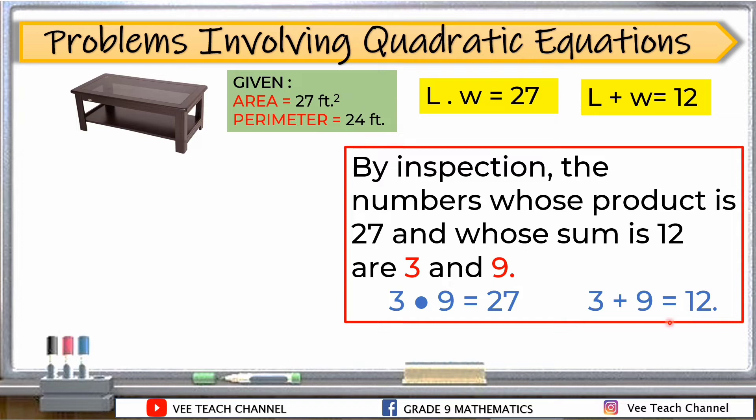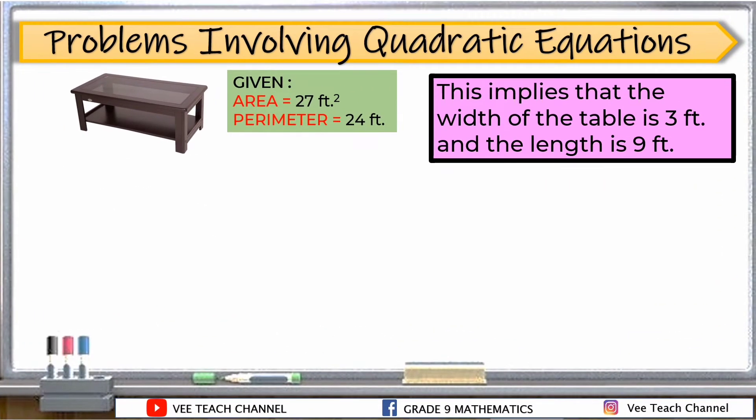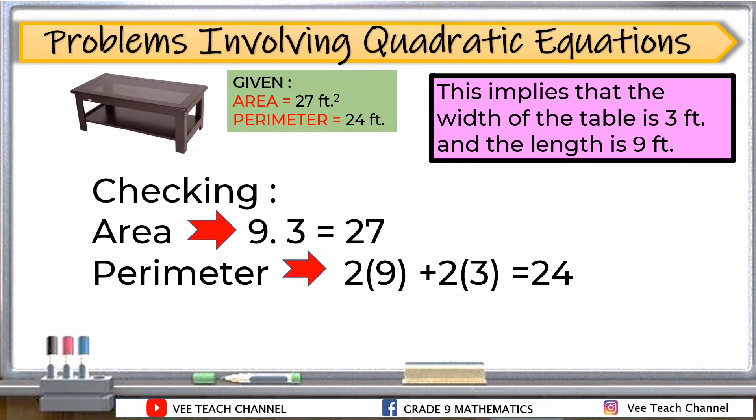Makikita nga natin na ang number ay 3 at saka 9. Check natin kung talaga ba ang 3 and 9 yung magsasatisfy dun sa product na 27 and sum is 12. So, 3 times 9, 27, tapos 3 plus 9 is equal to 12. This implies that the width of the table is 3 feet and the length is 9 feet. So since 3 and 9 yung nakuha natin as our roots, ito yung magiging sukat ng width and length ng ating table. Siyempre, i-check natin. Kailangan i-checking din tayo.